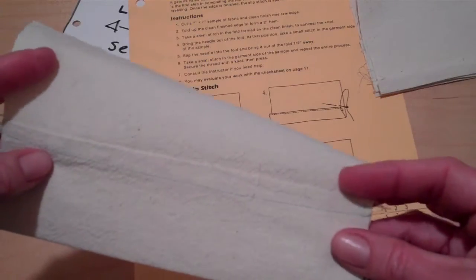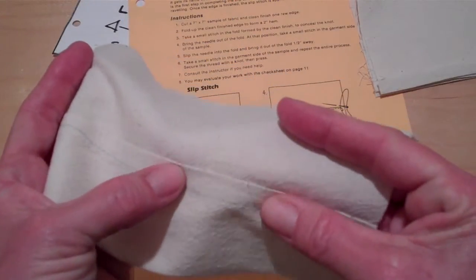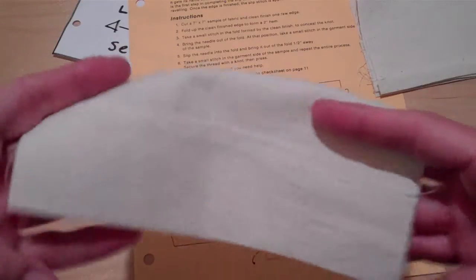Step number four is to hem with the slip stitch, also called a blind hem because you cannot see anything. So if it's done correctly, you'll barely see any stitches here or on the other side.